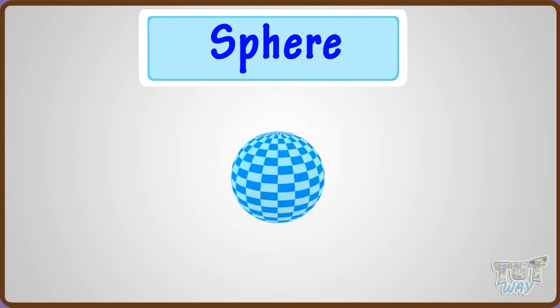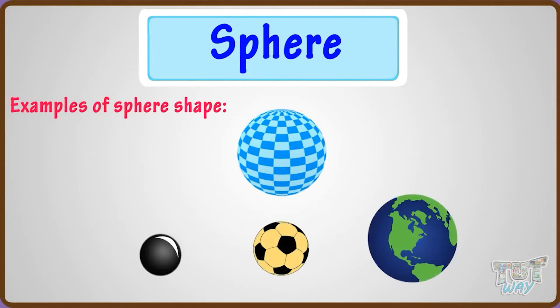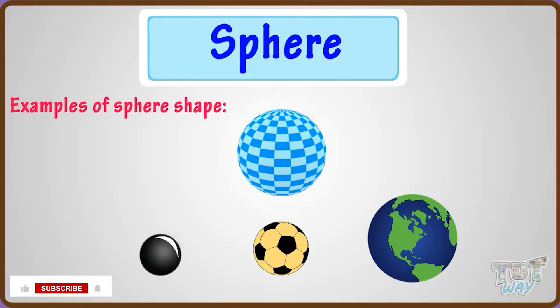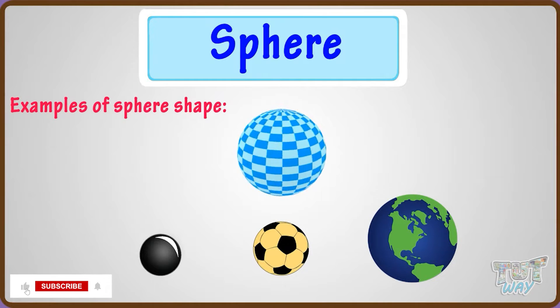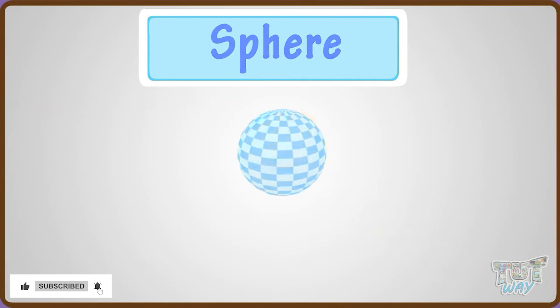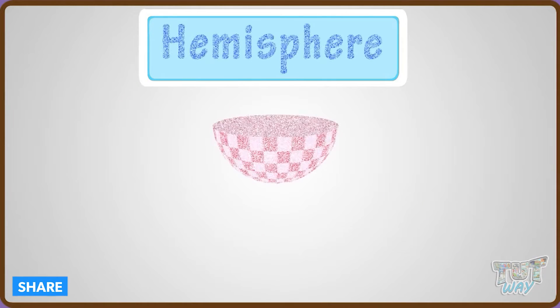These are a few objects spherical in shape. Now, let's learn another shape — that is hemisphere.